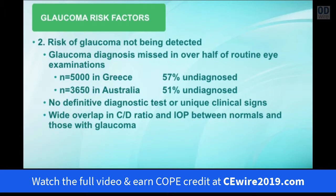The other factor, though we're not really going to go through it today, is the risk of glaucoma not actually being detected. That's often a more critical factor than the ones we automatically think of. In some large population studies, they found that around half the population has glaucoma but are unaware of their diagnosis — 57% undiagnosed in Greece, and around 51% in Australia. The reason is that there's no definitive diagnostic test for glaucoma, and there's wide overlap in cup-to-disc ratio and intraocular pressure between normals and those with the disease.